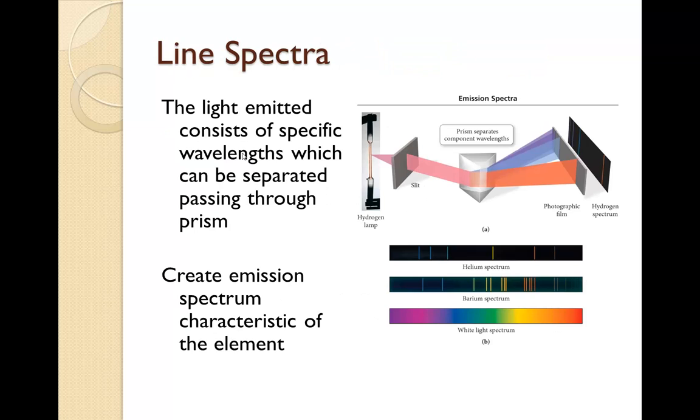I'll give you an example. Notice down here, this is an example of a regular rainbow. All the lights are blending together. However, with the line spectrum, very specific lines show up of lights being emitted.